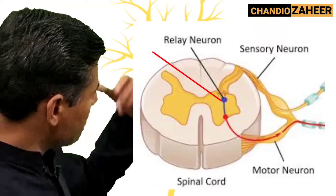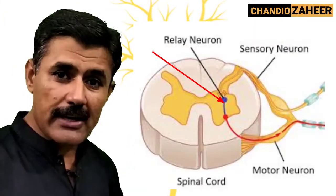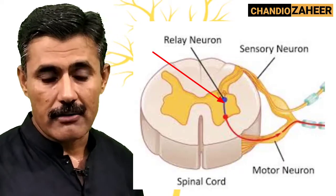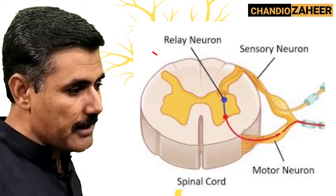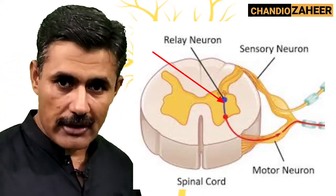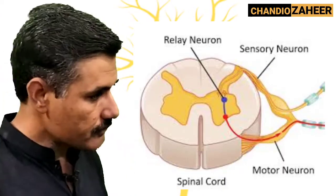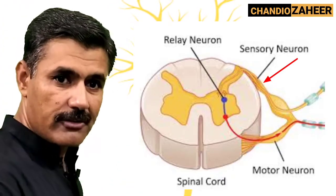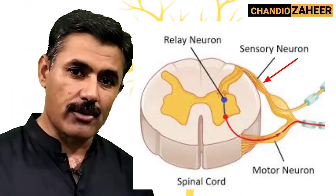Inter-neurons are not only present in the CNS — they are also present in the spinal cord. In the spinal cord, they can also produce reflex actions, where the message received by a sensory neuron makes a connection with the inter-neuron.